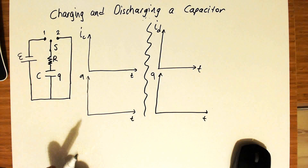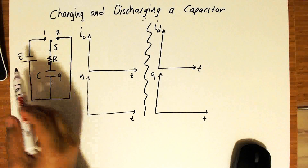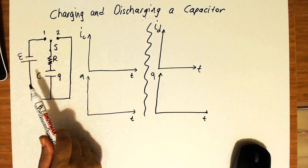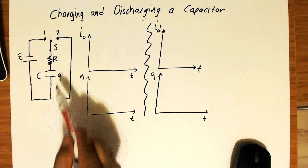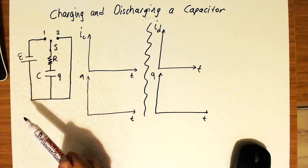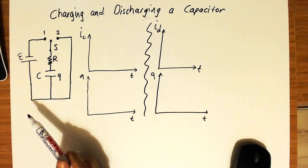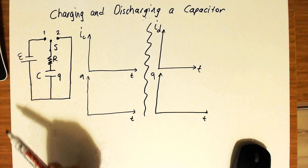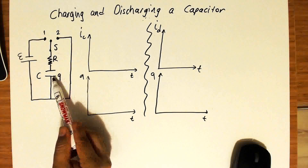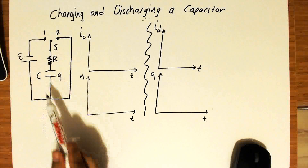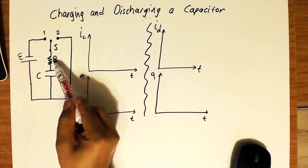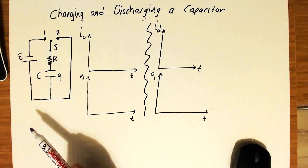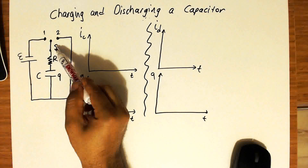Let's briefly overview what happens in charging and discharging of a capacitor. We have this simplest circuit diagram that shows both the charging and discharging process of a capacitor. Q denotes the charge on the capacitor on one of the plates. This is the battery, and this is the resistor that connects the capacitor to the battery. And we have the switch over here.